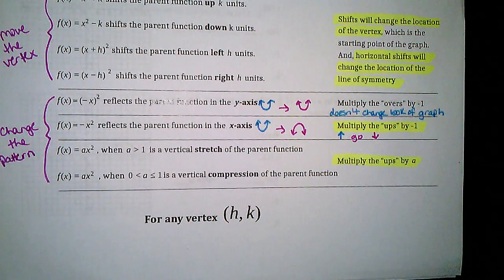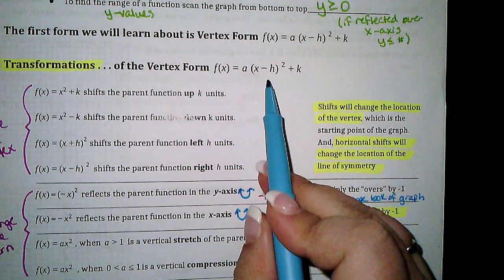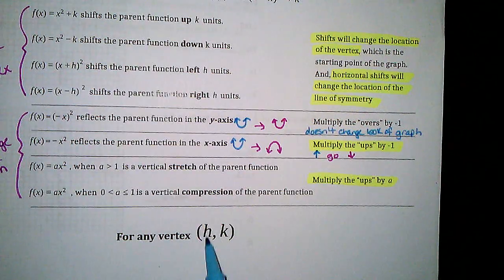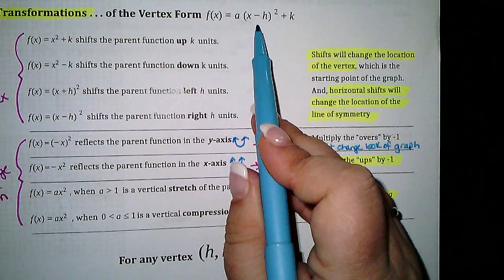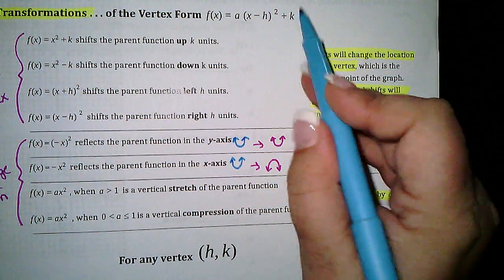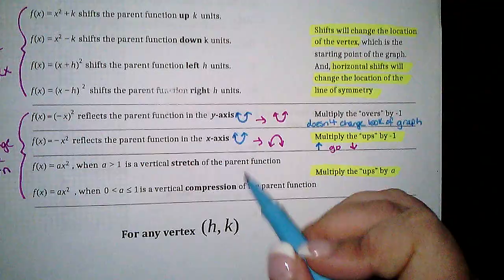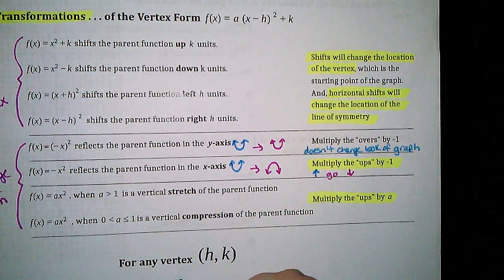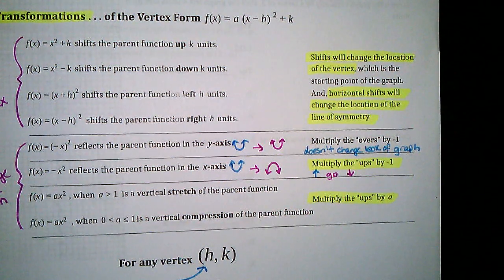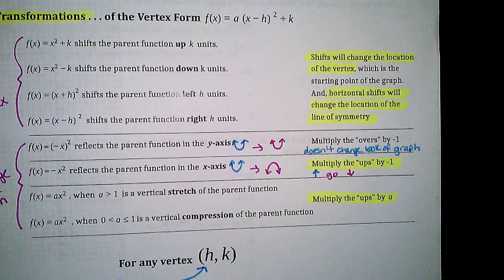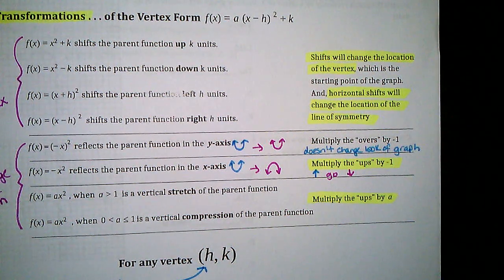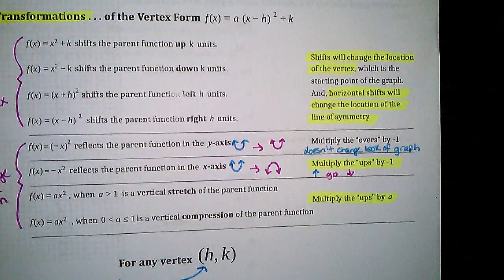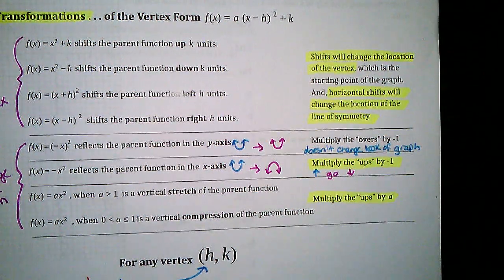Let's talk about the vertex. Any time you have a vertex, it's going to be (H, K). Notice the formula says negative H inside the parentheses, but when I write the vertex it's positive H — so the stuff inside the parentheses changes its sign when it becomes your x value. The outside stuff is lazy: it just keeps how it is. Outside stays the same, inside changes its sign. For any vertex, x equals H is the line of symmetry — sometimes called the axis of symmetry. So whatever the x value is of your vertex, that's your line of symmetry.